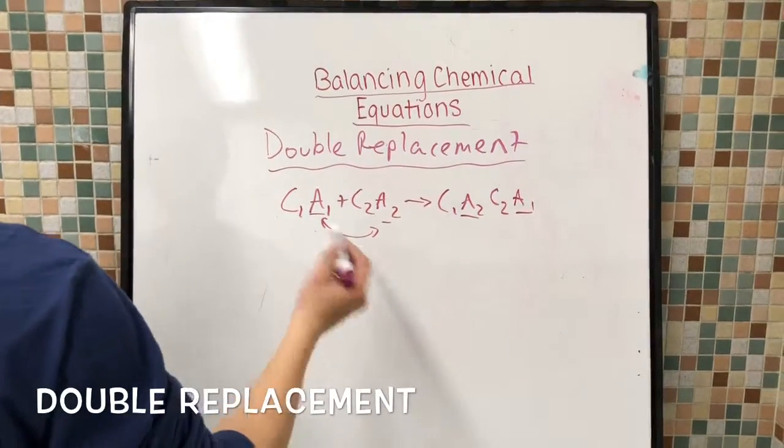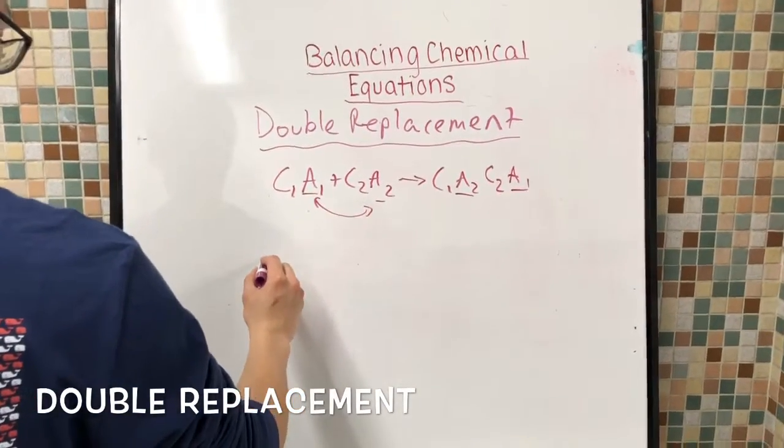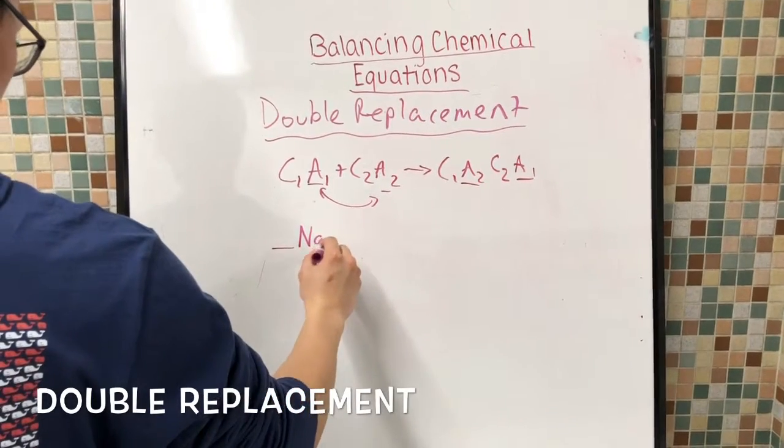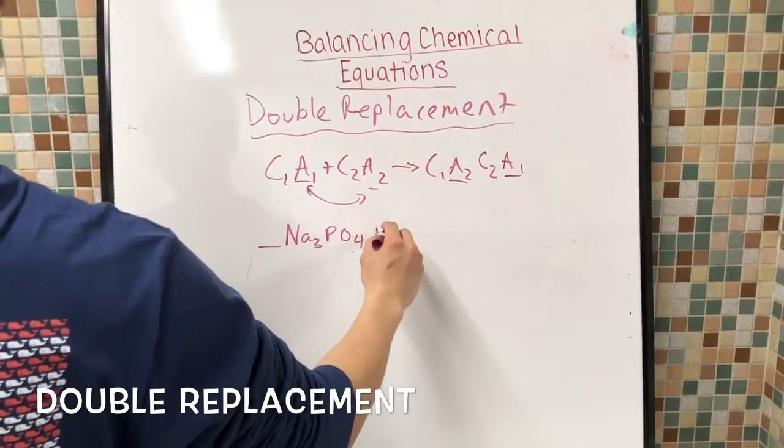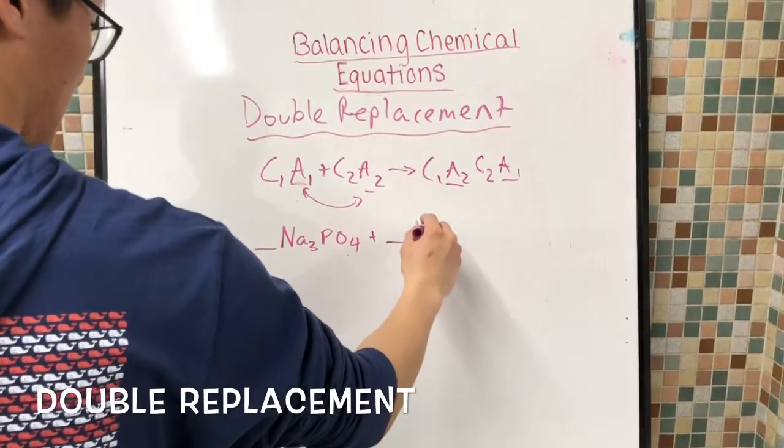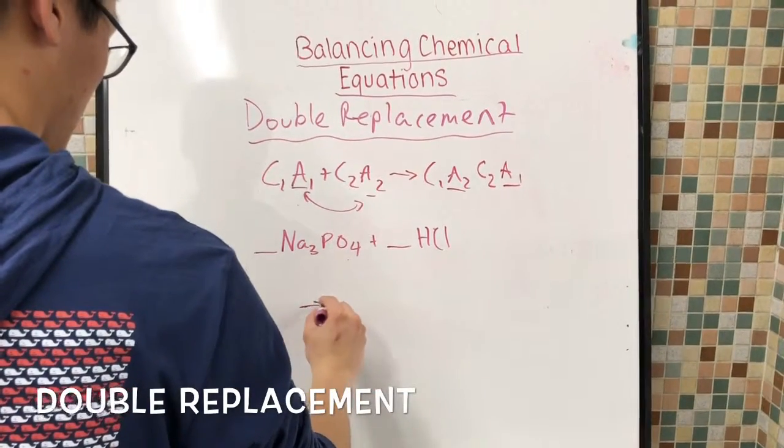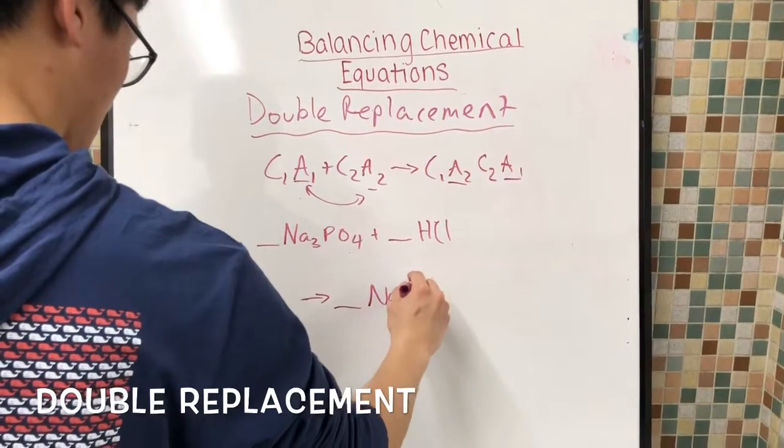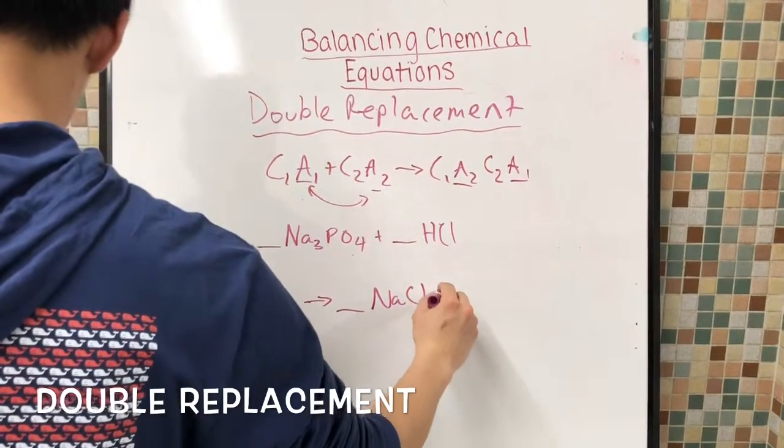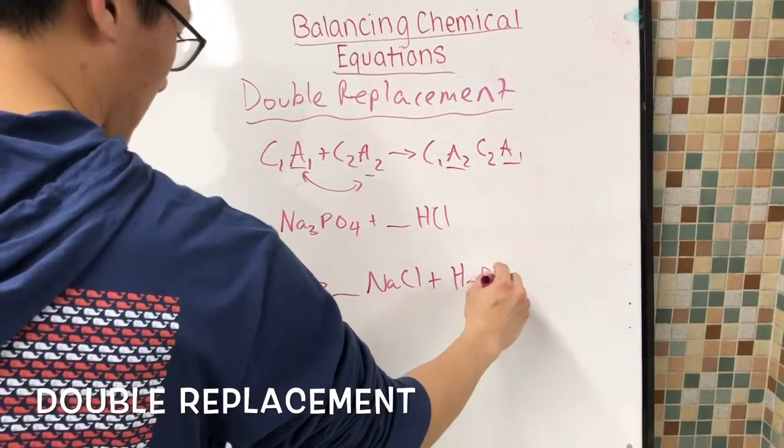Now for example, we will be doing this equation. So Na3PO4 plus HCl and that makes NaCl plus H3PO4.